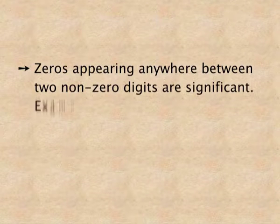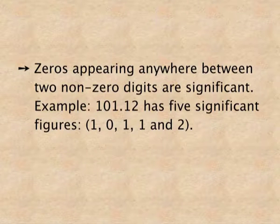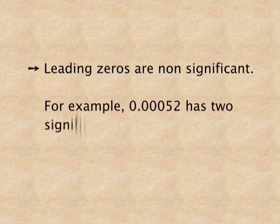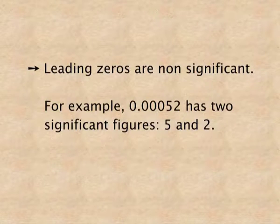Second rule: zeros appearing anywhere between two non-zero digits are significant. For example, 101.12 has five significant figures, because the 0 is lying between two non-zero digits, 1 and 1, so it is significant. Third rule: all zeros before the first non-zero digit are non-significant. For example, 0.00052 has only two significant figures — 5 and 2 — because all the zeros are before 5, which is the first non-zero digit.